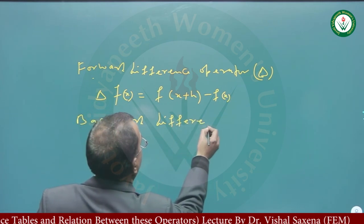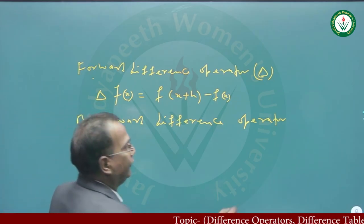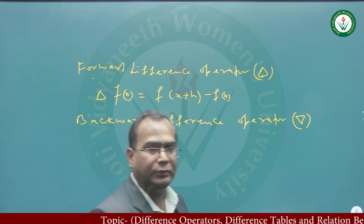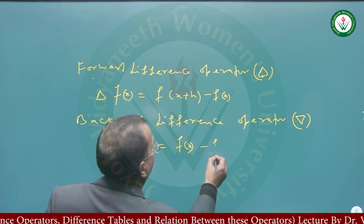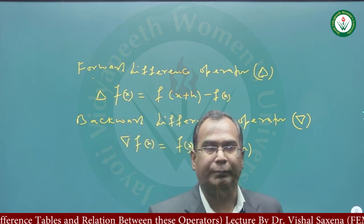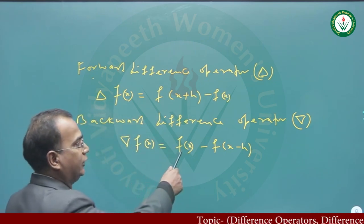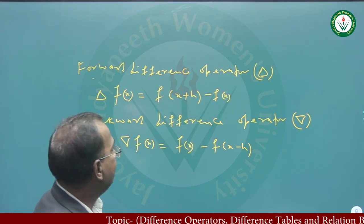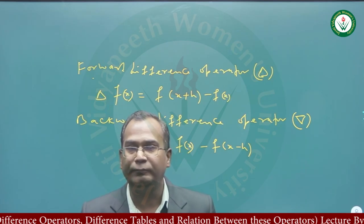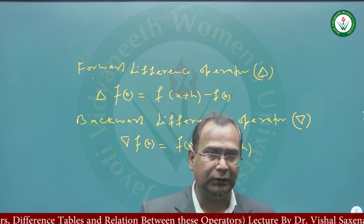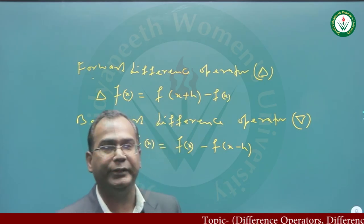Now we discuss about the backward difference operator. This is written by nabla, and nabla of f(x) is equal to f(x) minus f(x minus h). This is called the backward difference operator. So nabla is the backward difference operator — it takes the current value f(x) minus its previous value f(x minus h).